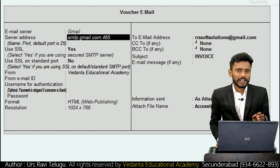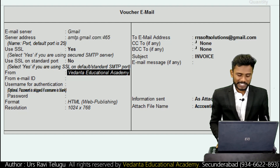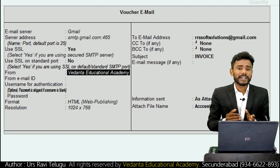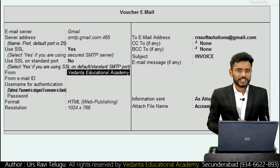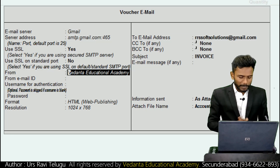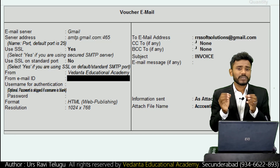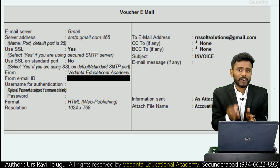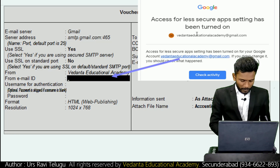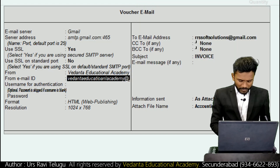We are using Gmail as the mail server, so just press Enter. When you select Gmail, the Gmail configuration is auto-captured - don't touch these settings. Next it is asking about the 'From Email ID' - who is delivering these mails. The 'From' name is Vedanta Educational Academy. Next confirm your email ID - make sure you confirm the correct and active email ID along with the password.